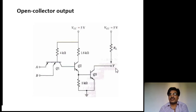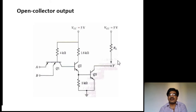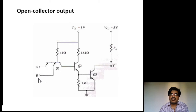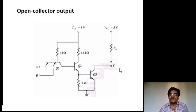Since Q3 is in open circuit, and the output is connected to Vcc through an external resistor RL, the output voltage is approximately 5 V, which is considered as logic 1. So for inputs 0,0 the output is logic 1. Similarly, if one input is 0 and the other is 1, the same result occurs — approximately 5 V at output Y, which is logic 1.